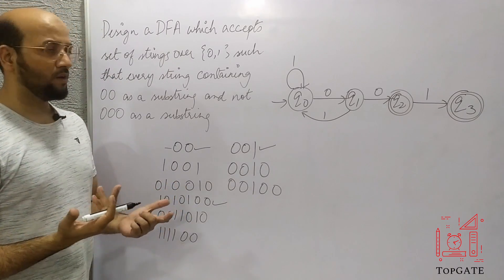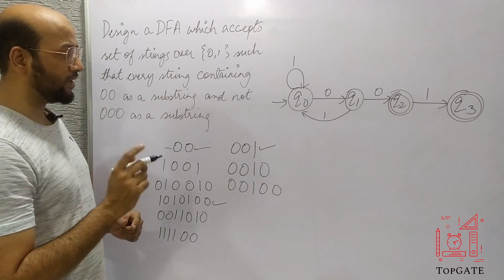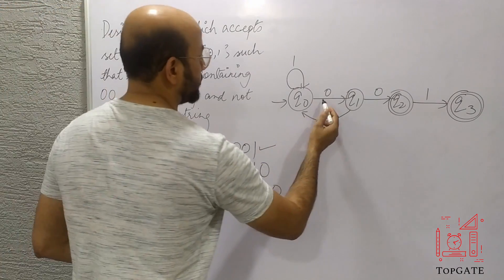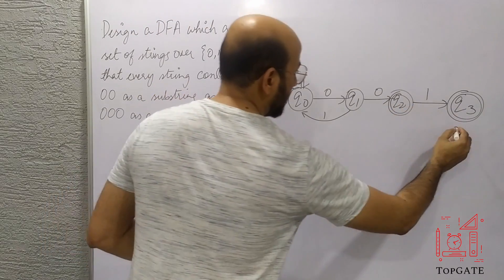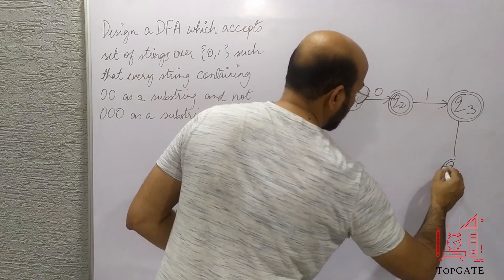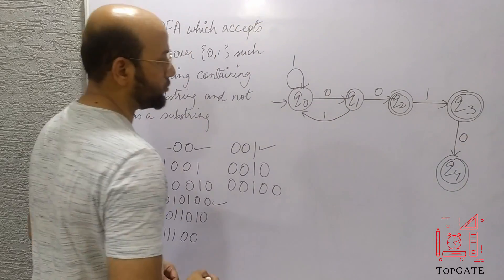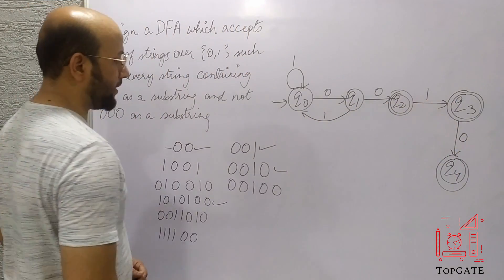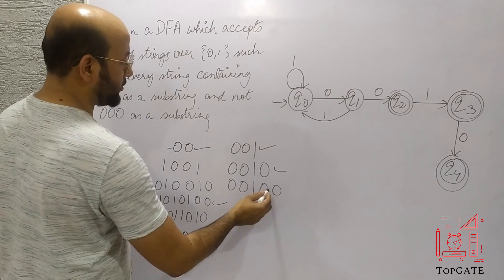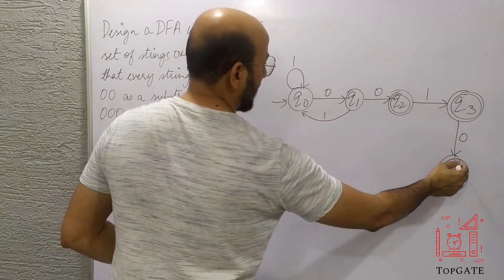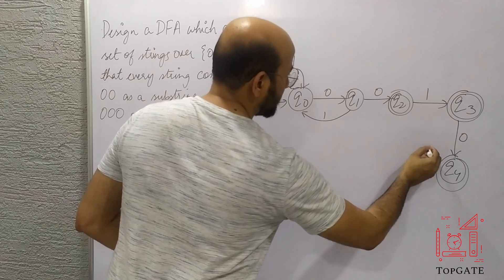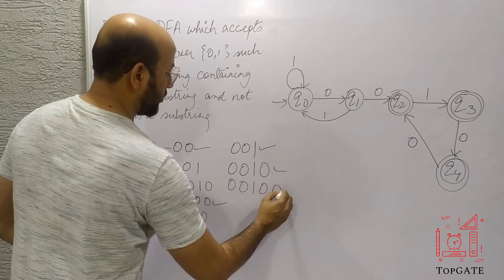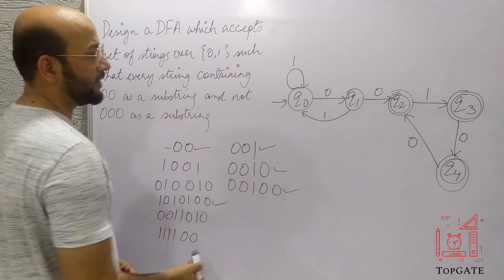Now for '0010': after '001' we see a 0. I take one more state q4, make it final, and connect q3 to q4 with input 0. So '0010' is accepted. Then for '00100' — after '0010' we see another 0 — I connect q4 back to q2 with input 0. So '00100' is also accepted. This allows repeated occurrences of '00' separated by 1s.